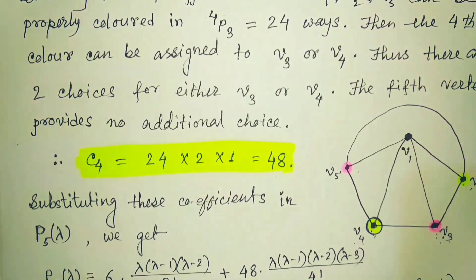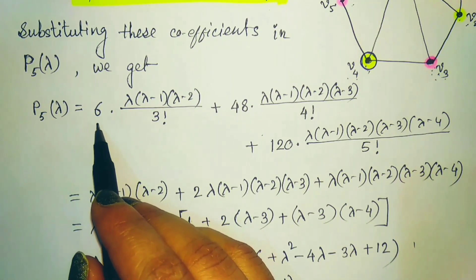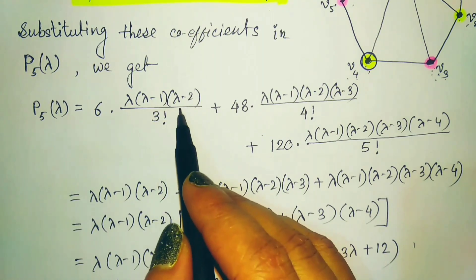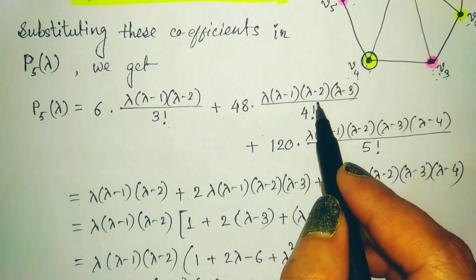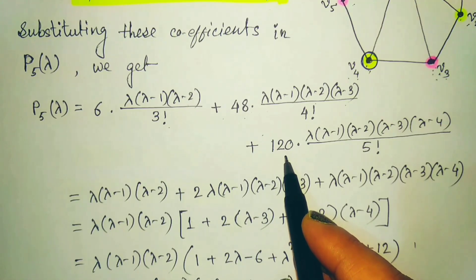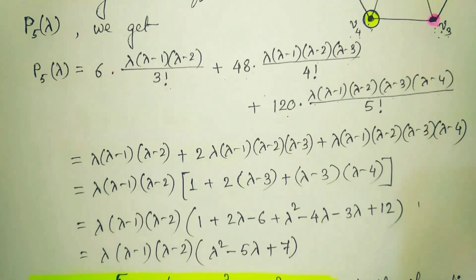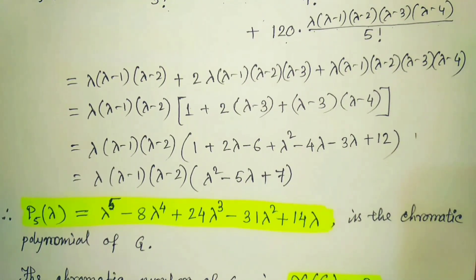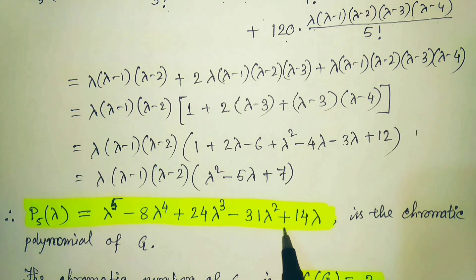Substituting the coefficients C1=0, C2=0, C3=6, C4=48, C5=120 into the polynomial: P(5,λ) = 6·λ(λ−1)(λ−2)/3! + 48·λ(λ−1)(λ−2)(λ−3)/4! + 120·λ(λ−1)(λ−2)(λ−3)(λ−4)/5!. After simplification, the chromatic polynomial is: λ⁵ − 8λ⁴ + 24λ³ − 31λ² + 14λ.